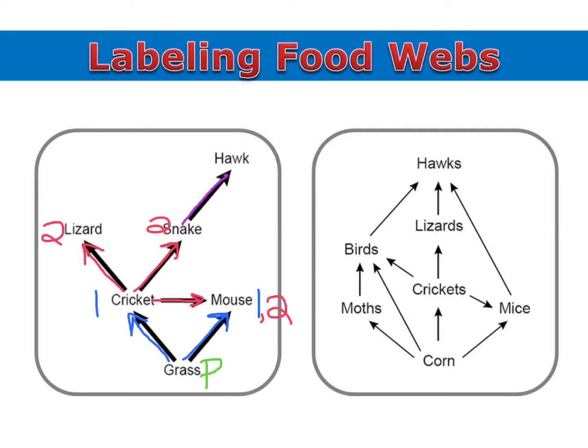And since the hawks eat a secondary consumer, that makes them a tertiary consumer. Notice that the mouse ended up being both a primary and a secondary consumer. That's because the mouse is an omnivore — it eats grass and crickets. And that's completely okay for something to get more than one trophic level assigned to it in a food web.